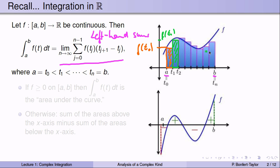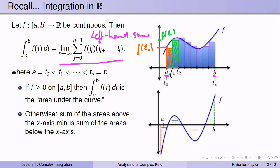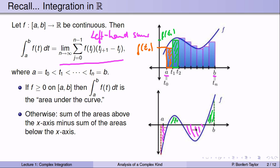That sum is an approximation for the area under the curve. In the limit, as n goes to infinity and these rectangles become very narrow, they give a very good approximation for the area under the curve. If f is above the x-axis, the integral is simply the area under the curve. Otherwise, we take the portions above the x-axis and subtract from them the portions below.